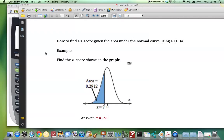In this tutorial, we will learn how to find a z-score given the area under the normal curve using a TI-84. Consider the example: Find the z-score shown in the graph.